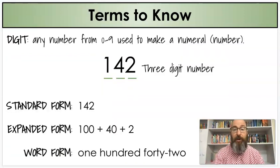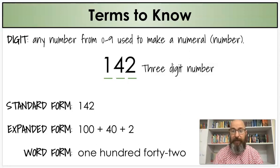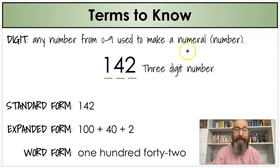Now, some other terms we need to know. The first term is digit. Any number from zero to nine used to make a numeral or a number is a digit. Here I have an example, 142. It's a three-digit number. You can see I have three digits. One, two, three.